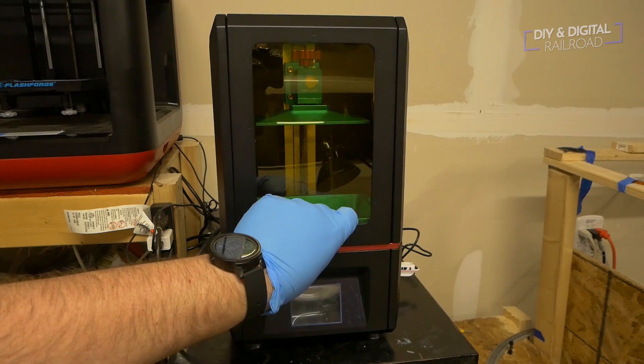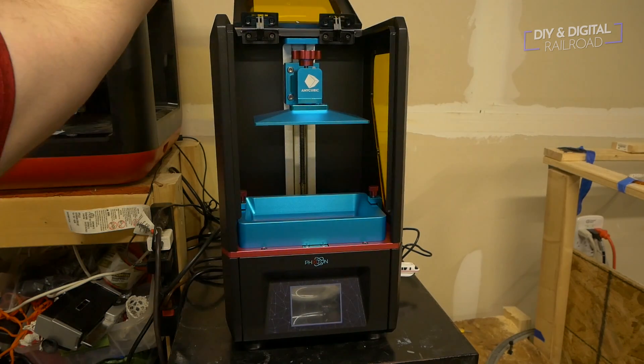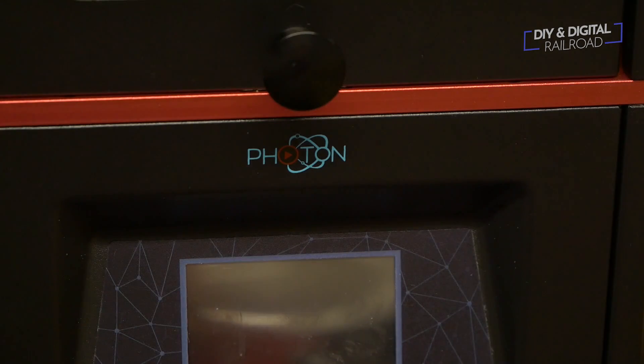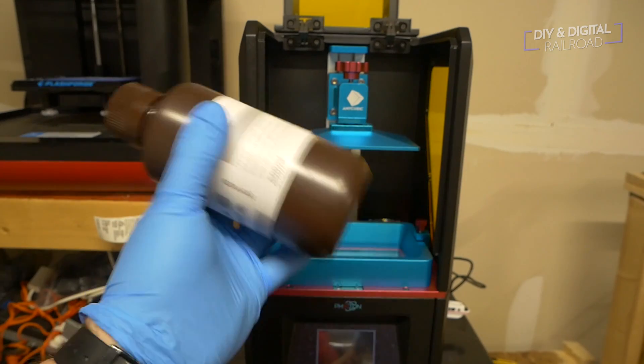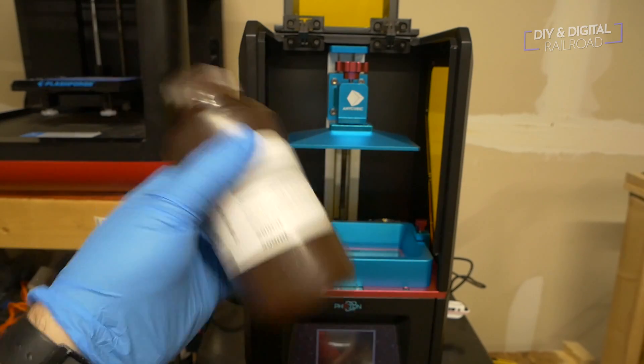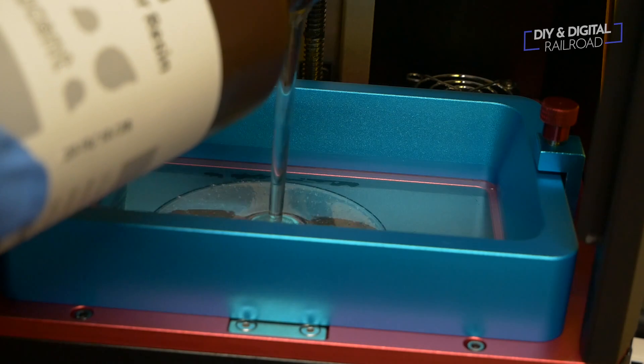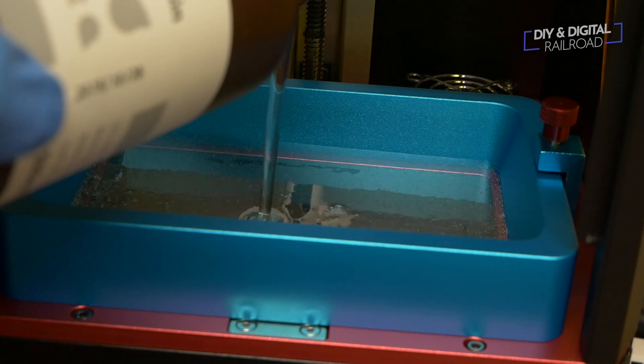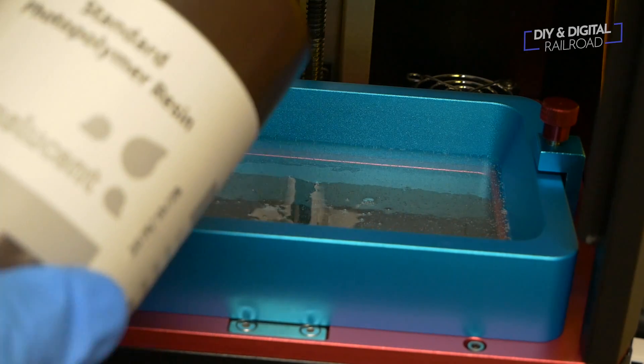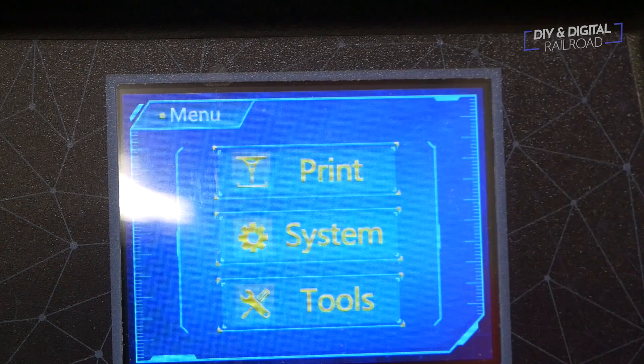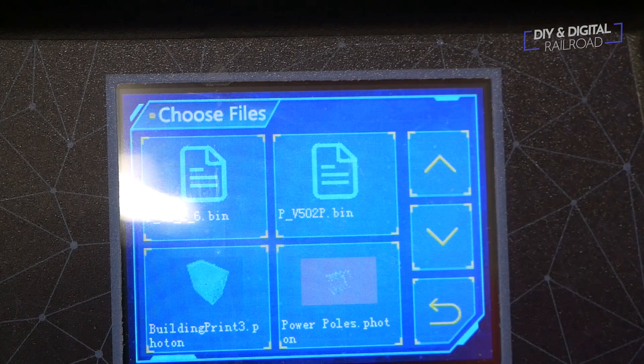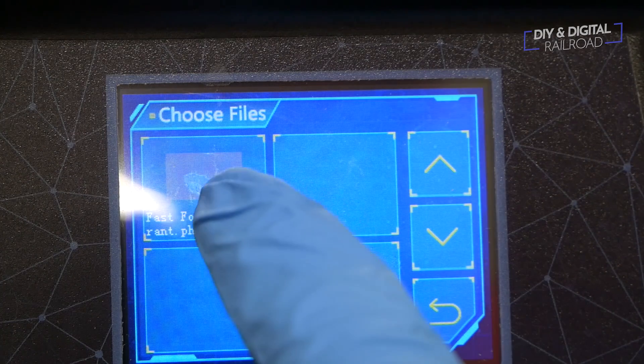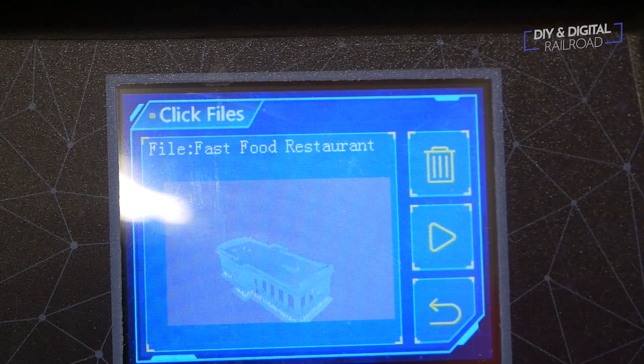The printer we're going to be using is an Anycubic Photon. It's a recent purchase of mine, an upgrade from my longer orange tint, and I absolutely love it. It is absolutely fantastic. I start by shaking up my resin. I'm using Elegoo translucent resin, and I go ahead and pour it into the vat, making sure that I have enough to get the print done. I then go into the menu and select my print file, and press play to begin printing.